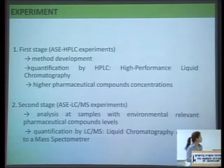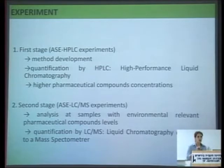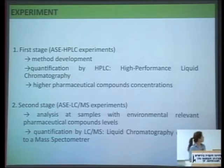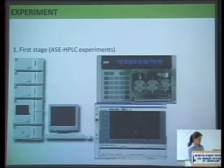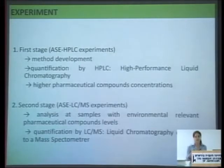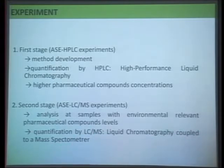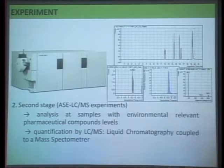The overall experiment was divided in two stages. The first stage consisted of method development, using higher concentrations of pharmaceuticals at parts-per-million levels because it is easier to work with higher amounts. Quantification was done by high-performance liquid chromatography. After developing the method, the second stage used environmentally relevant pharmaceutical concentrations — the concentrations present in natural environment samples. To measure those, we used LC-MS, which is liquid chromatography coupled to a mass spectrometer.